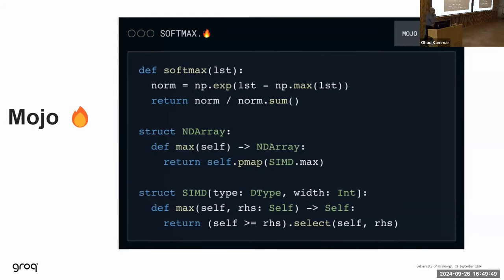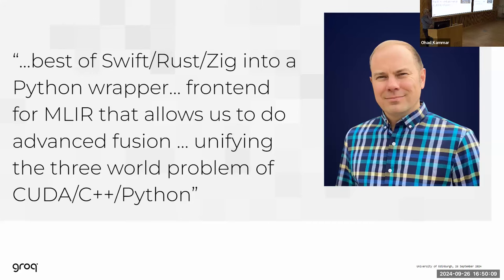Although the world of machine learning is dominated by Python, there are other mainstream efforts to produce new languages for machine learning. A notable example is Mojo, developed by Chris Lattner, who is famous for the LLVM compiler framework, the Swift programming language, and the MLIR machine learning compiler framework that we use at Groq. Chris's motivation speaks to the fact that today we have a diverse zoo of languages and platforms that make up the machine learning world, introducing unnecessary complexity and friction.